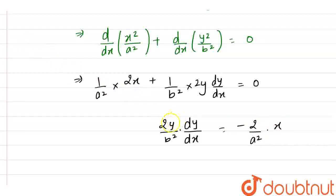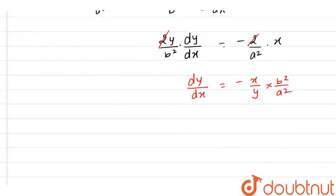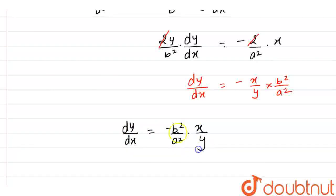Now you can clearly see that the 2 gets cancelled with the 2. So we are having dy by dx equals minus of x by y into b squared by a squared. So if we write this properly, our final answer is: dy by dx equals minus of b squared by a squared into x by y, and hence this is our final answer.